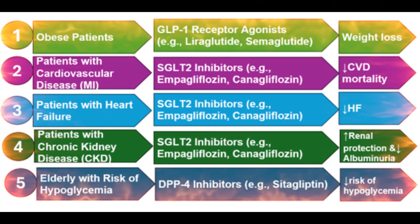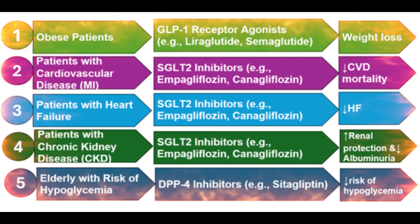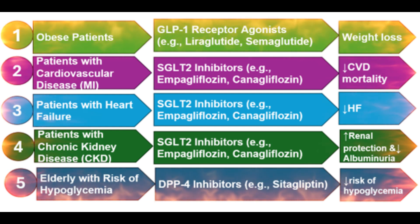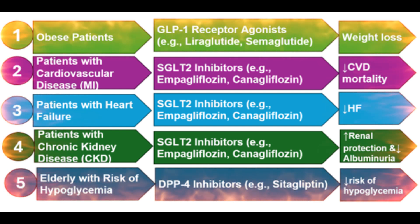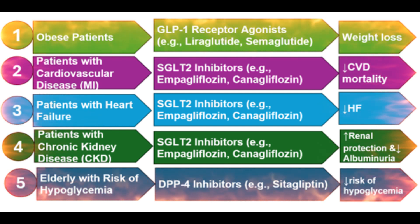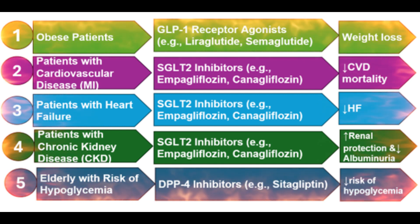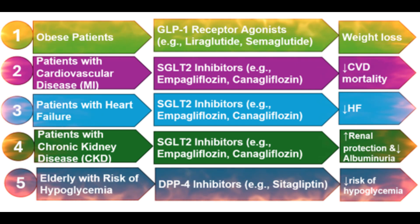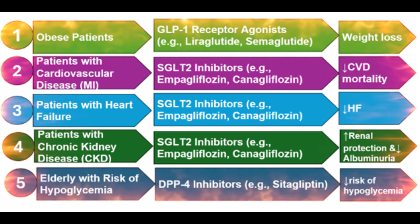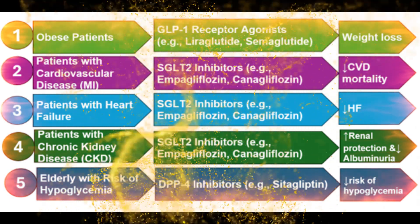Case 2 – Patients with Established Cardiovascular Disease. For individuals with established cardiovascular disease, we prefer SGLT-2 inhibitors like empagliflozin and canagliflozin. These medications reduce cardiovascular events and mortality in high-risk patients.